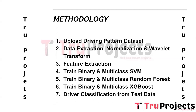The second module is data extraction, normalization, and wavelet transform. This module involves extracting data from the uploaded dataset. The extracted data is then normalized to ensure consistency and eliminate any bias. After normalization, the raw data is transformed using the wavelet transform technique, which helps in capturing and analyzing patterns within the data. In the third module, feature extraction, the wavelet-transformed data's relevant features are extracted — essential characteristics that capture important information about the driving pattern.